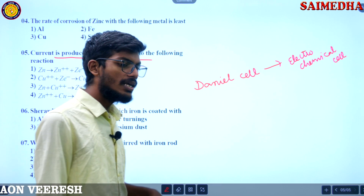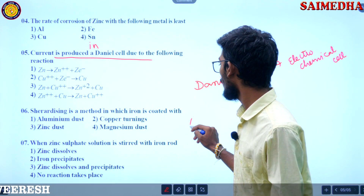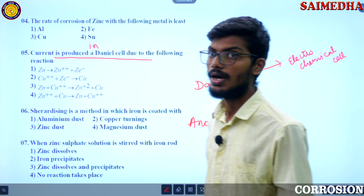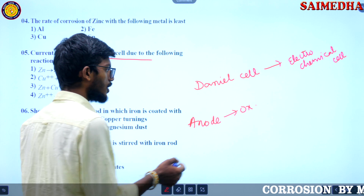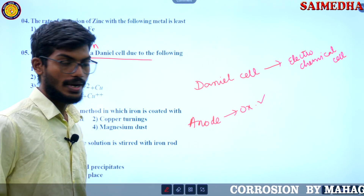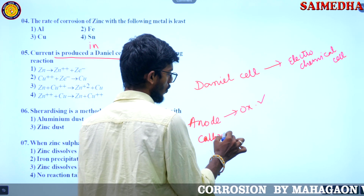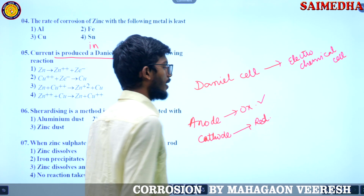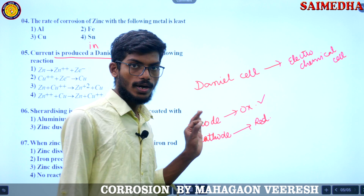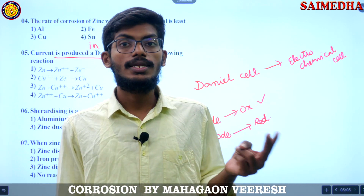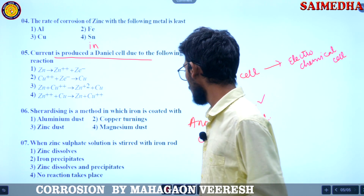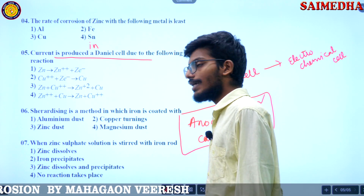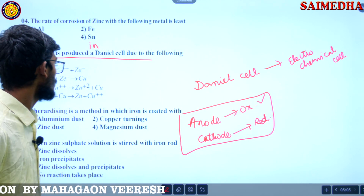So if a reaction is to happen, then what we require is the anode reaction, which is always oxidation at the anode. We also require the cathode reaction, which is nothing but reduction. Both anode and cathode reactions are required.